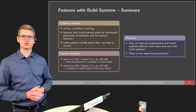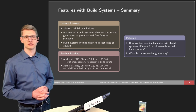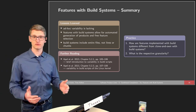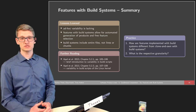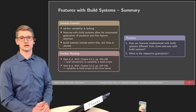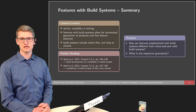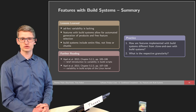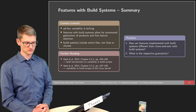In both cases, you could think about the respective granularity — what granularity is supported when using build systems for clone and own on one hand, and for conditional compilation features with build systems on the other. See you later for the next part.